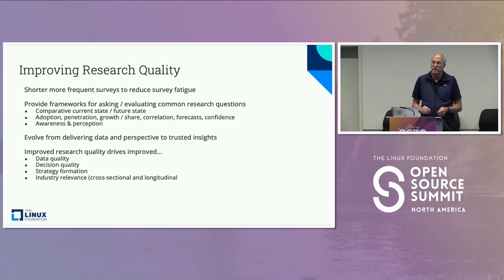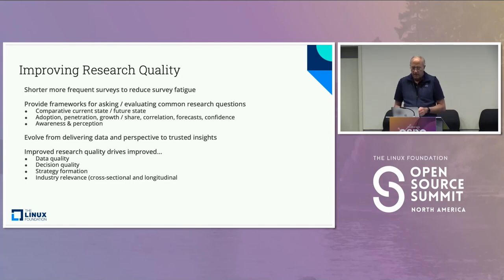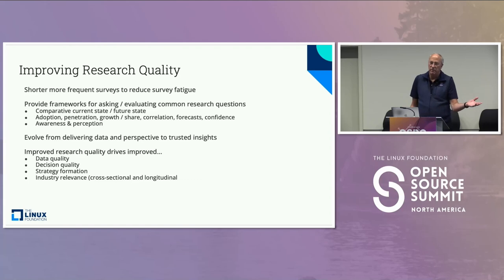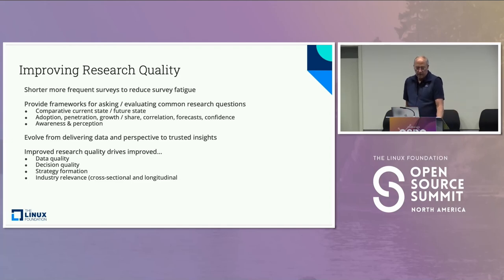One thing that keeps me up at night is how we can improve our research quality. It really comes down to two things: we can improve the way we do the actual research process, and we can improve the quality of the people we talk to, because respondents are where the information comes from. If you talk to the right people, you get good information. If you talk to the wrong people, you don't. There are ways to deal with both of these.